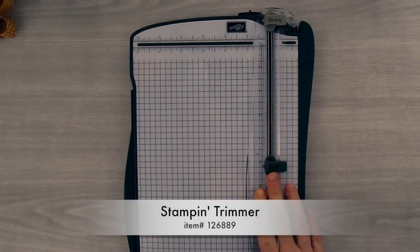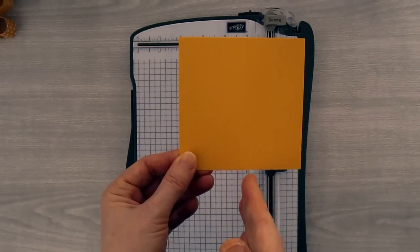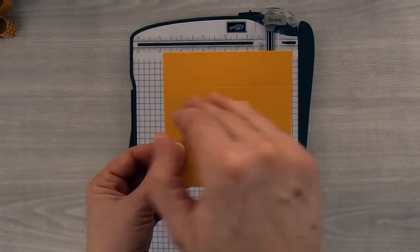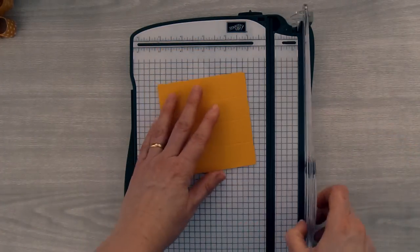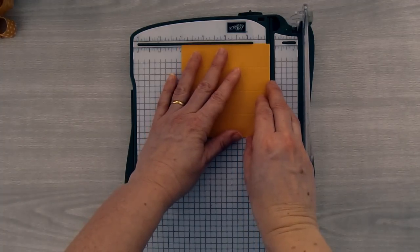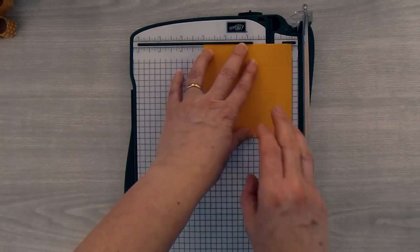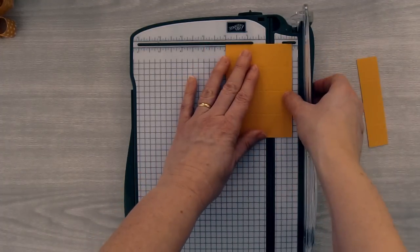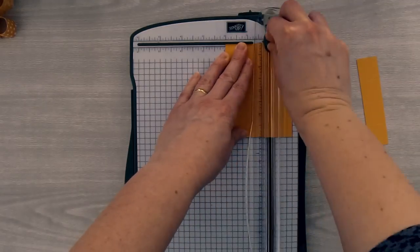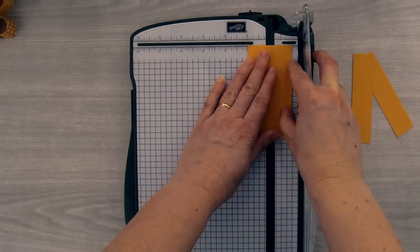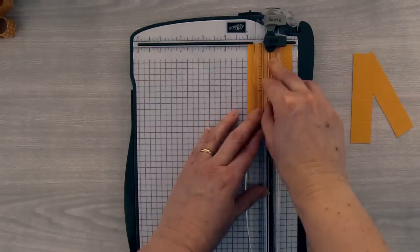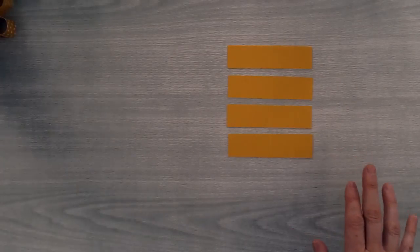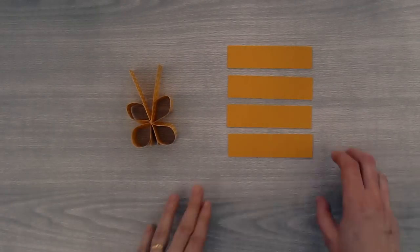Then you're going to bring in your stamping trimmer. We scored coming down like this, so you're going to rotate your cardstock a quarter turn so that your score marks are now running horizontally, and you're going to place this into the cutter. We're going to cut these into 1 inch strips. I've got 4 filler strips here, and I'm going to bring my framework back in.